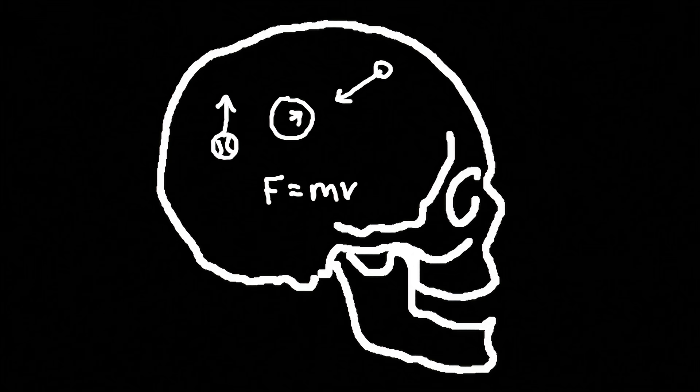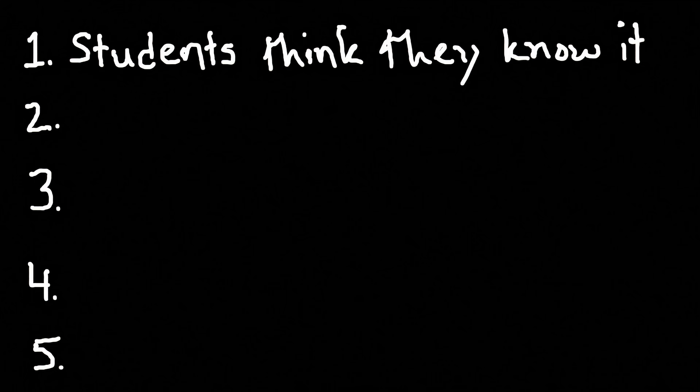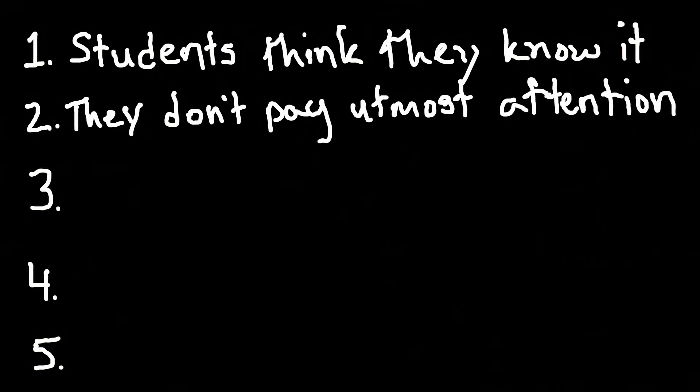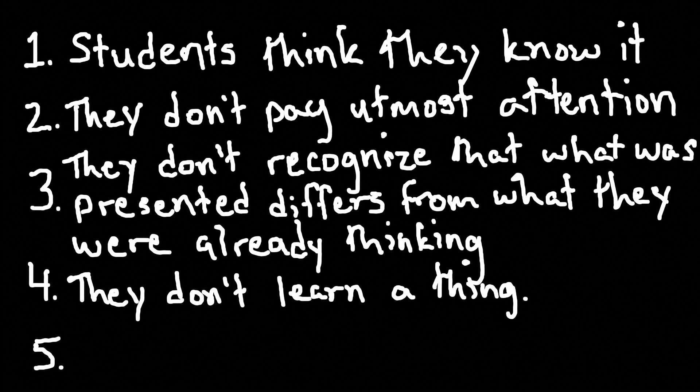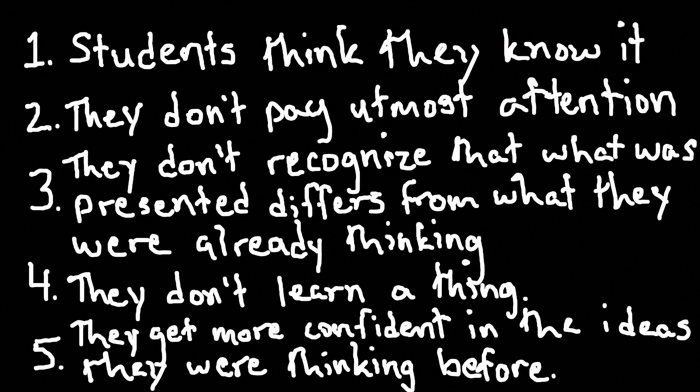It seems if you just present the correct information, five things happen. Number one, students think they know it. Two, they don't pay their utmost attention. Three, they don't recognize that what is presented is different to what they're already thinking. And four, they don't learn a thing. And finally, five, perhaps most troublingly, they get more confident in the ideas they were thinking before. And this is a vicious cycle that we have to find a way to break in order to have effective science education.